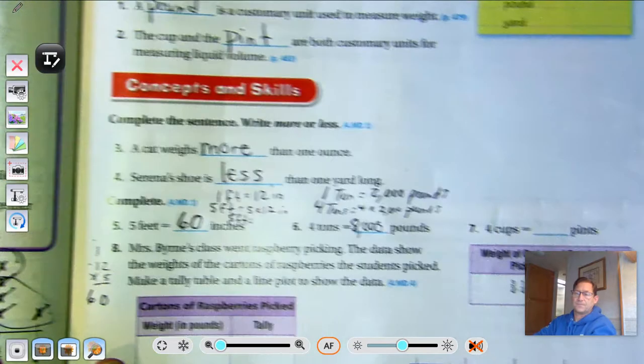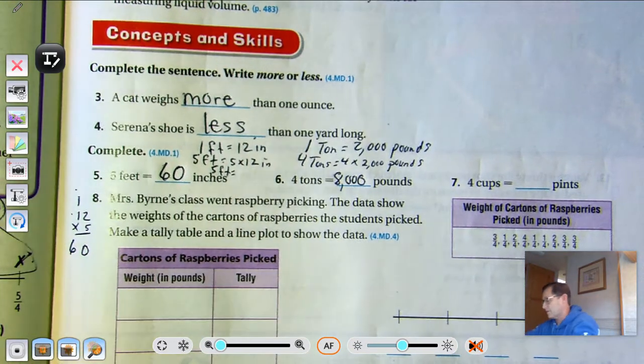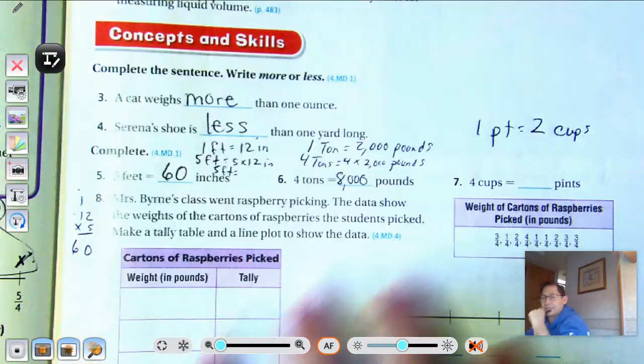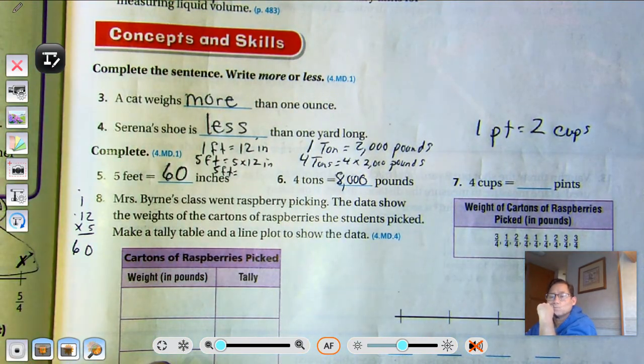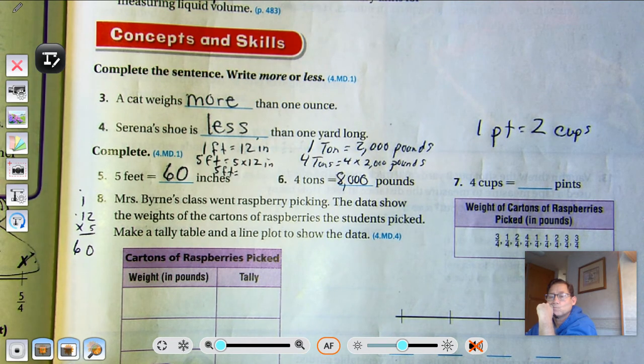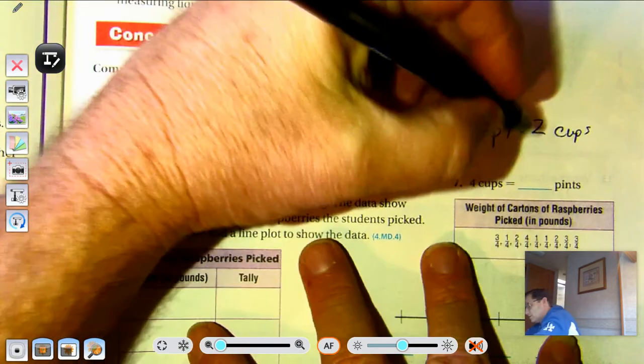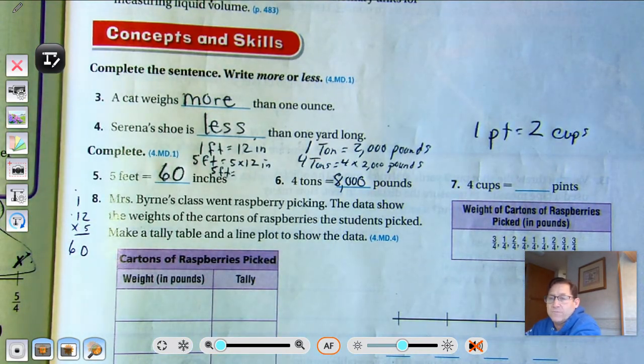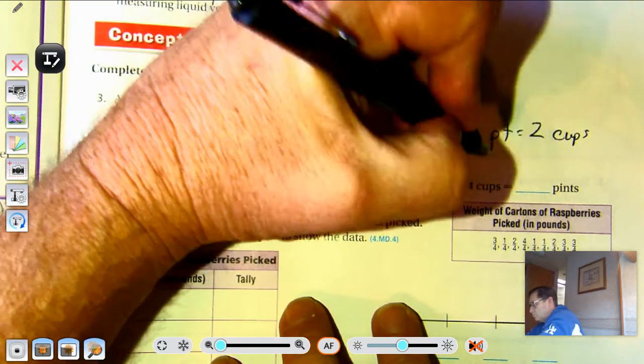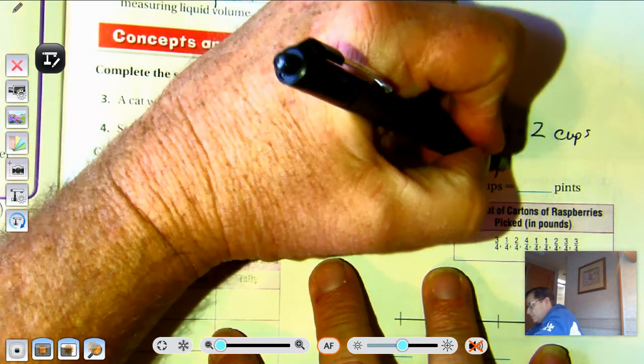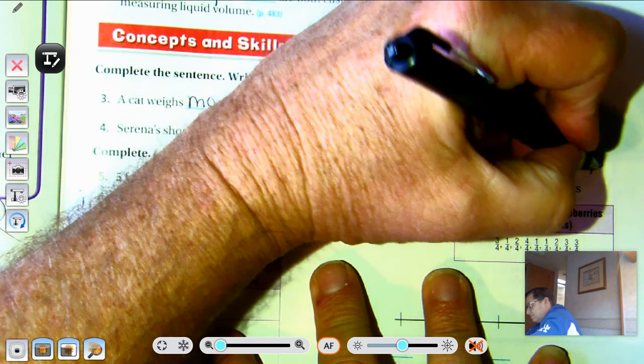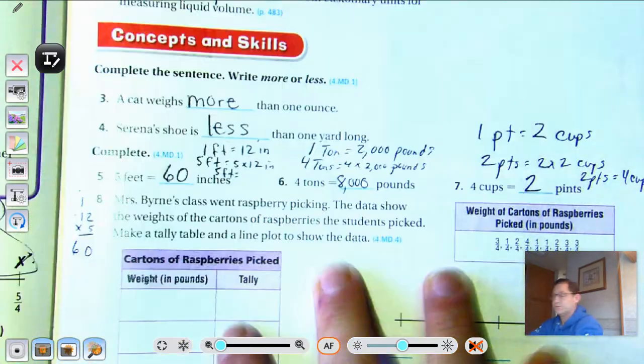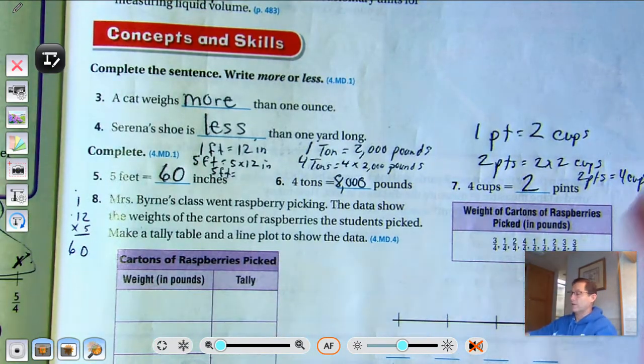Four cups equals how many pints? Well, we know one pint equals two cups. So how many pints would equal four cups? Well, two pints. Two pints equals two times two cups, which equals four cups. So four cups is two pints.